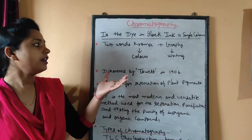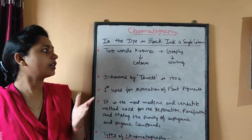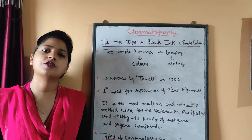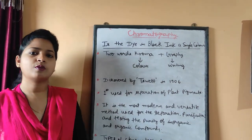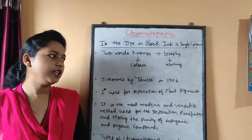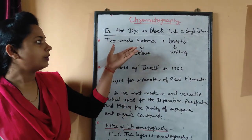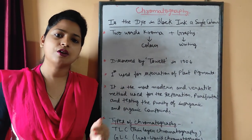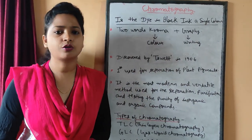Chromatography is a very innovative technique to separate color pigments. The word 'chromatography' is made up of two words: 'chroma' and 'graphy.' Chroma is a Greek word — that's why it starts with K, not C — and it means 'color.' Graphy means 'writing.' So chromatography means the writing of colors, meaning we made this method on the basis of separation of colors.